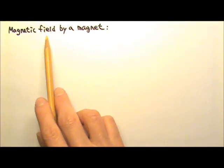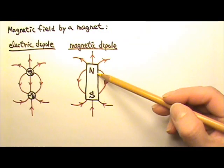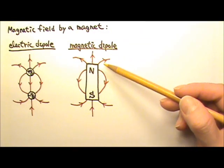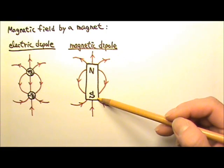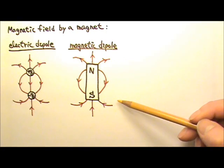So we can talk about magnetic field and magnetic field lines. A magnet is a magnetic dipole with a north pole and a south pole. It produces magnetic field around it.